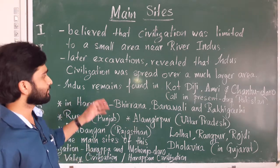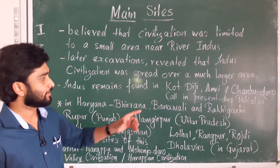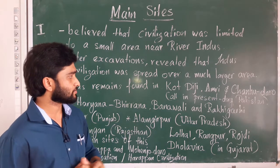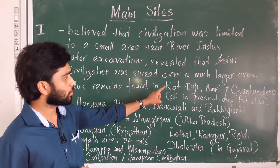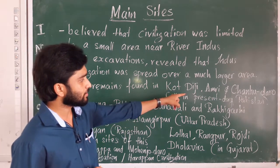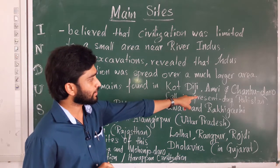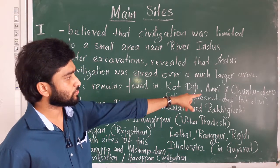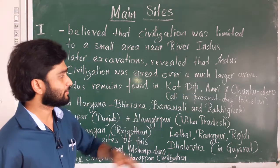In the present Pakistan, we can see there are sites such as Kot Biji, Amri, and Sutkagen-dor. These three sites are in present-day Pakistan.